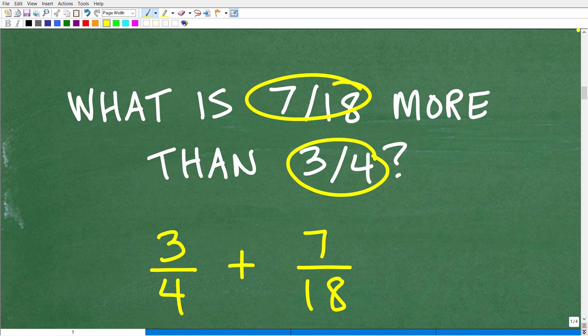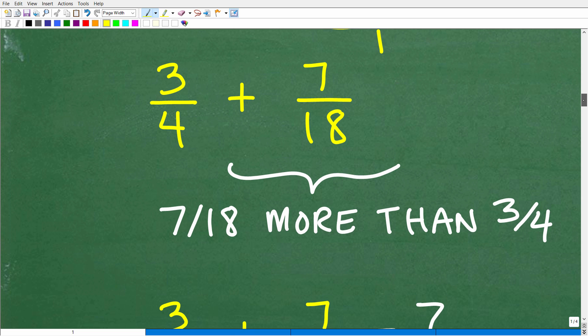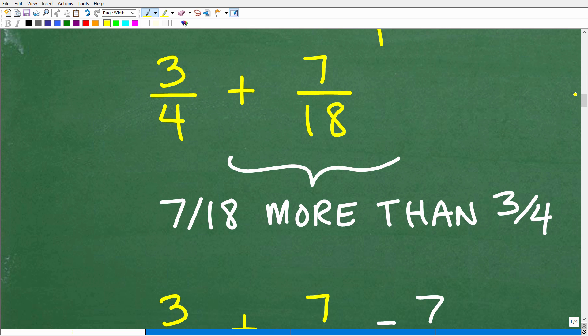So for example, instead of seven over 18 more than three fourths, what about three more than one? What does that mean? Three more than one. Well, if I have one and then I have three more, it looks like we want to add three to one. So we're just basically adding these two numbers. And because we don't have any negative numbers here, we're not dealing with a subtraction situation.